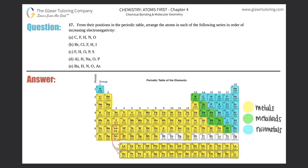Number 17: from their positions in the periodic table, arrange the atoms in each of the following series in order of increasing electronegativity. For parts a through e, all we have to do is rank these atoms from the smallest electronegativity all the way to the largest.